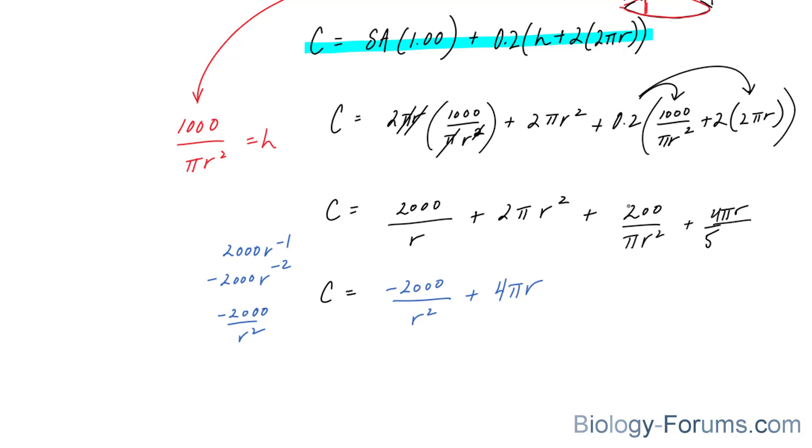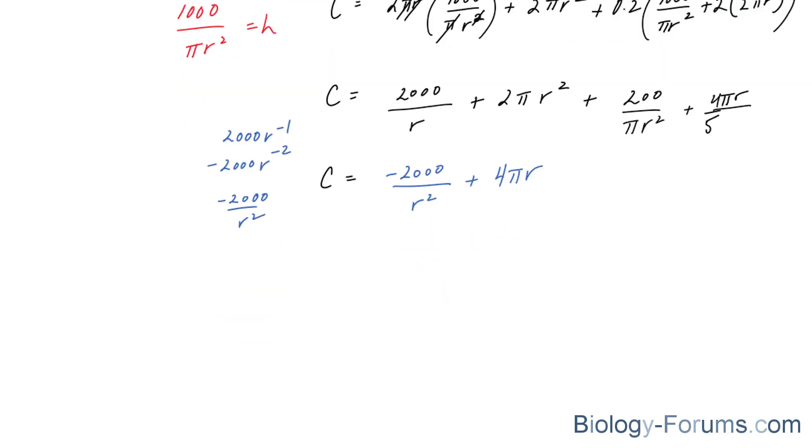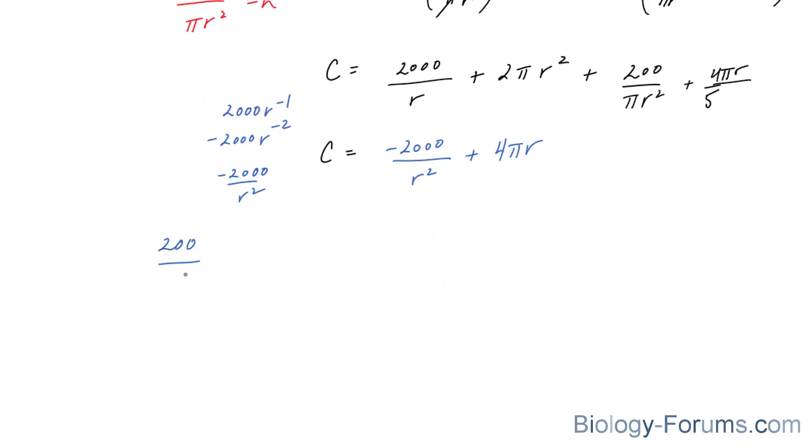This 2 goes down, and the derivative of this will be a little more complicated. It is the following: 200 over pi r to the power of negative 2. We're going to bring this negative 2 down, which makes it negative 2 times 200 is negative 400 over pi, and this becomes r to the power of negative 3, which goes down here. So negative 400 over pi r to the power of 3, plus this r goes away because of the power rule. We end up with 4 pi over 5.